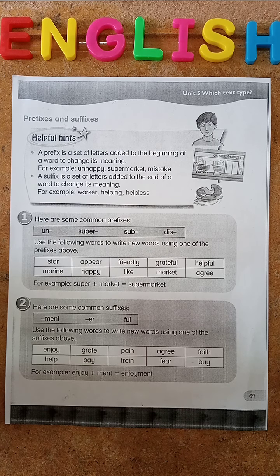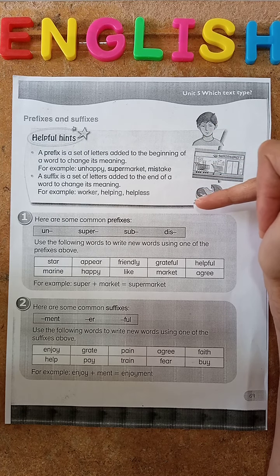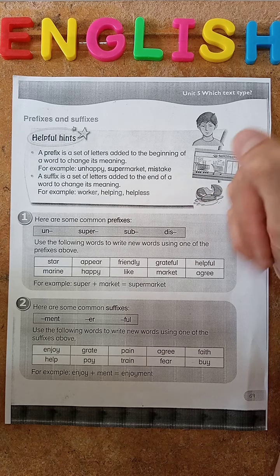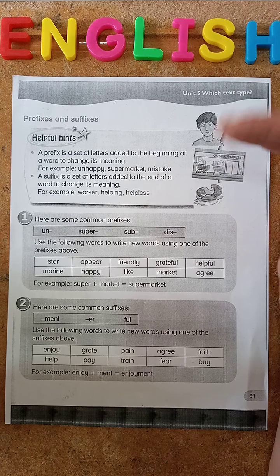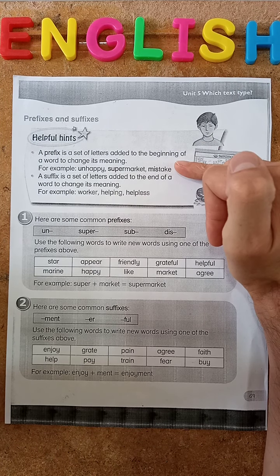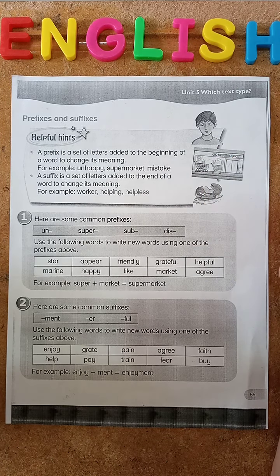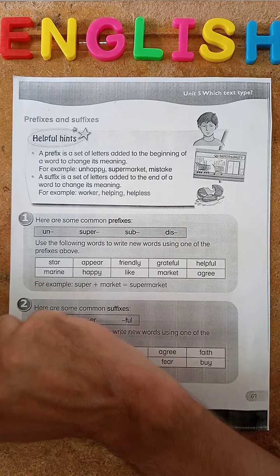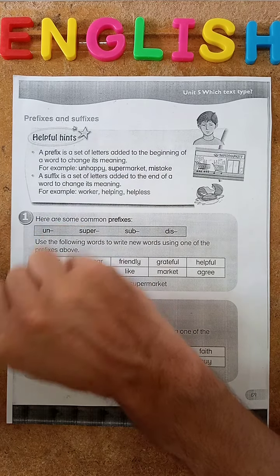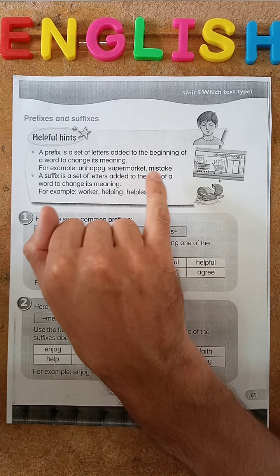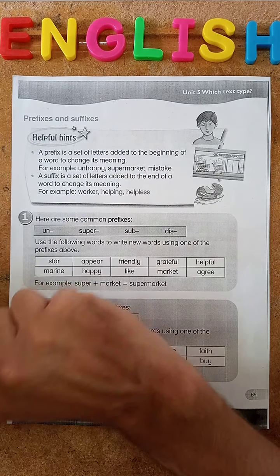We can see the helpful hint box at the top. It's going to remind us that a prefix is a set of letters added to the beginning of a word to change its meaning. For example: unhappy, supermarket, mistake.